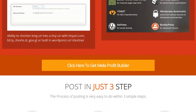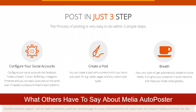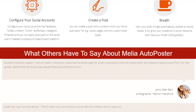Posting is really just three simple steps. First, configure your social accounts — Facebook, Twitter, LinkedIn, Tumblr, Buffer, Instagram, Pinterest — and you can auto post to the same platforms even if you need multiple or unlimited accounts for each. Then create a post — everyone knows how to create a post or page. And then just breathe — your post will automatically get posted to social media, growing your presence in social networks and making you more visible globally.